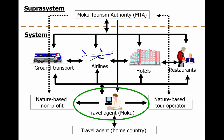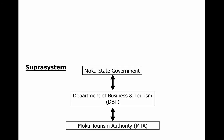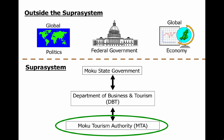You might be asking yourself: who uses a travel agent anymore? There are a few people that do, but largely this has gone away. So it's important to think about your system in the here and now to determine what kind of communication and components you have. The super system starts with the Moku Tourism Authority, the Department of Business and Tourism, and the state government, as well as people outside the super system: global politics, the federal government, and the global economy.